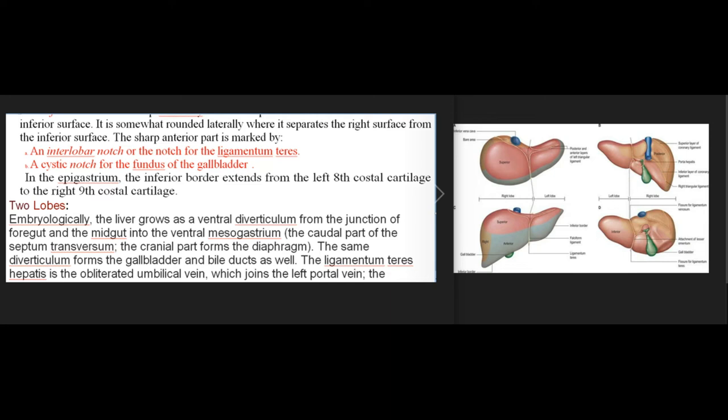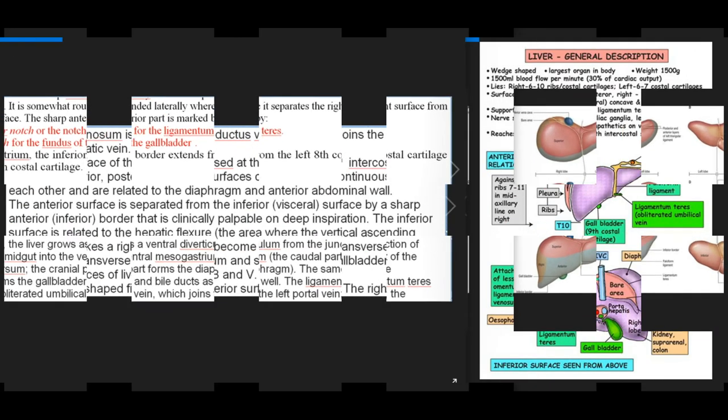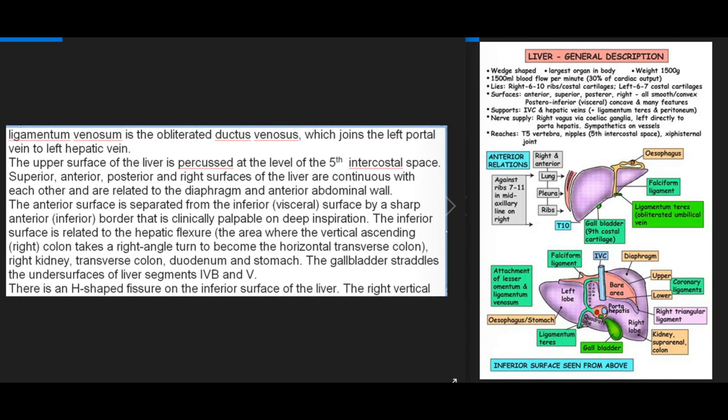Embryologically, the liver grows as a ventral diverticulum from the junction of foregut and midgut into the ventral mesogastrium (caudal part of the septum transversum; the cranial part forms the diaphragm). The same diverticulum forms the gallbladder and bile ducts as well. The ligamentum teres hepatis is the obliterated umbilical vein joining the left portal vein. The ligamentum venosum is the obliterated ductus venosus joining the left portal vein to the left hepatic vein. The upper surface of the liver is percussed at the level of the fifth intercostal space.